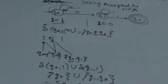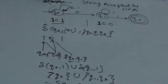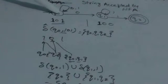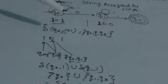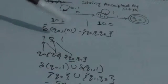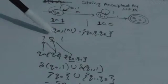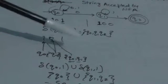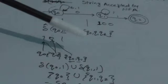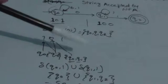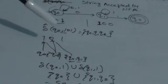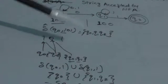From Q0 it will read the input symbol 0, which is the second symbol of the string. Here it has two choices: either it can jump to Q1 or remain in state Q0. So when it reads 0 we get a set of two states: Q0 and Q1.